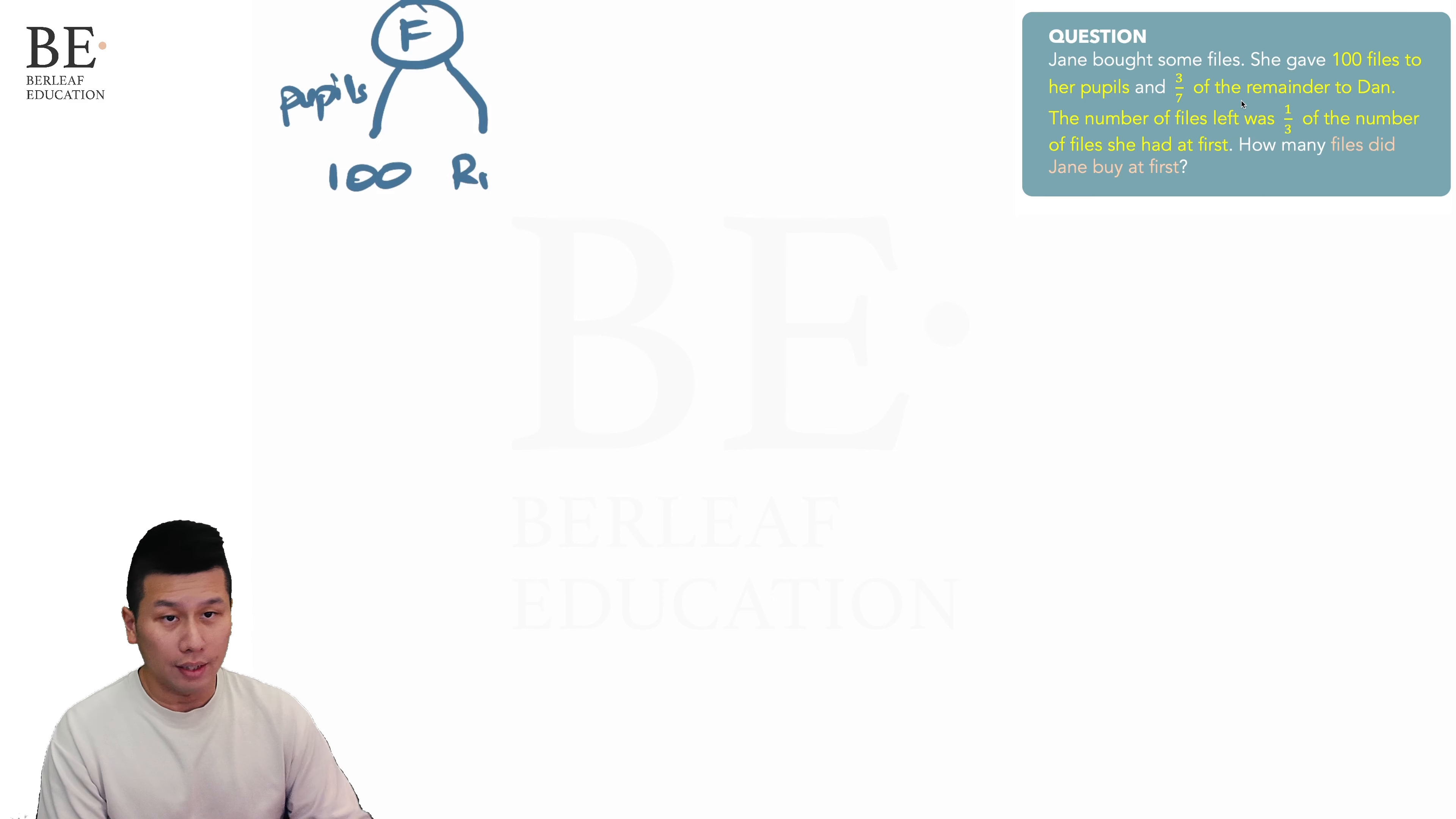R sub 1 represents the remainder after she gave 100 files to her pupils. Following that, we know that 3 over 7 of it was given to Dan, and the other branch can be found by using a part-whole concept, which is one whole minus 3 over 7, that gives us 4 over 7. And I call it remainder 2, which is R sub 2. This is what is left after giving away to pupils as well as to Dan.